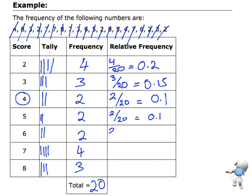A score of 6, 2 out of 20 is a relative frequency of 0.1. 7 is 4 out of 20, which is 0.2. And a score of 8 was 3 out of 20, or 0.15. So there is our frequency and relative frequency. Thank you.